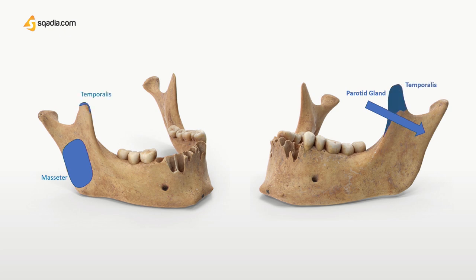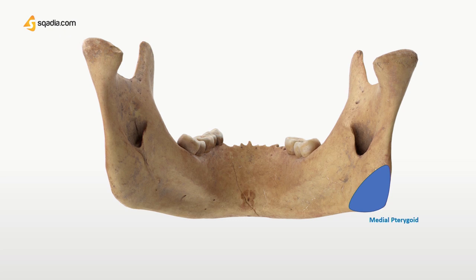The temporalis is inserted into the apex and medial surface of the coronoid process, with the insertion extending downwards on the anterior border of the ramus. The lateral pterygoid muscle is inserted into the pterygoid fovea on the anterior aspect of the neck, and is related to the medial surface of the ramus above the mandibular foramen. The medial pterygoid muscle is inserted on the medial surface of the ramus, on the roughened area below and behind the mylohyoid groove. To summarize, the ramus gives attachments to the masseter, medial and lateral pterygoids, and the temporalis muscle.